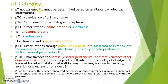Now coming to the small intestine. PT category: PT not assigned; T0 — no evidence of primary tumor; TIS — carcinoma in situ or high-grade dysplasia. T1 is when tumor invades the lamina propria or submucosa, further divided into T1A when lamina propria is involved and T1B when submucosa is involved.